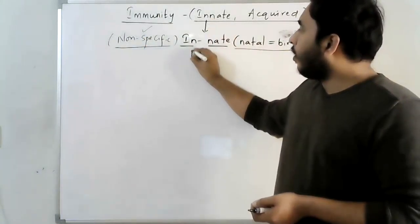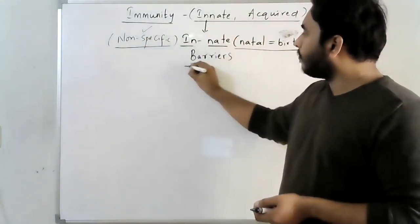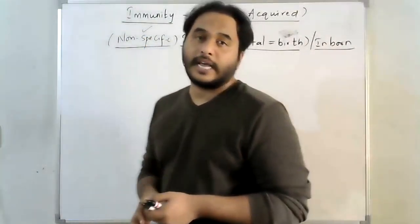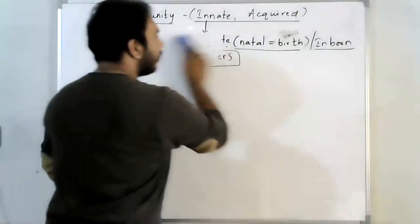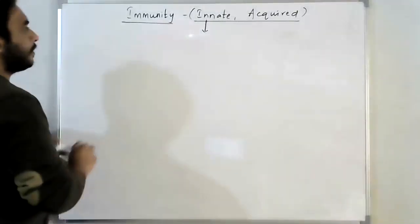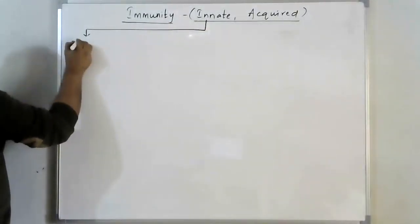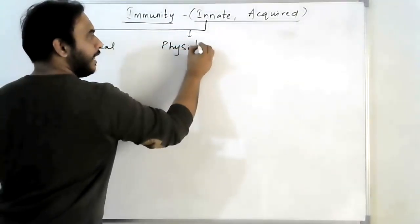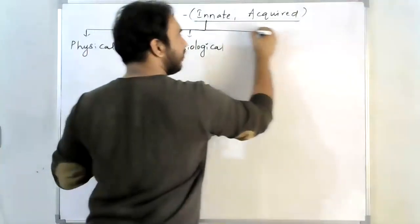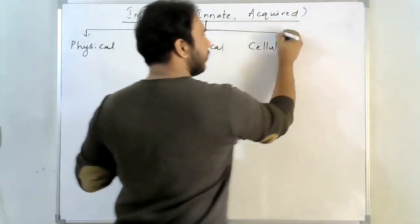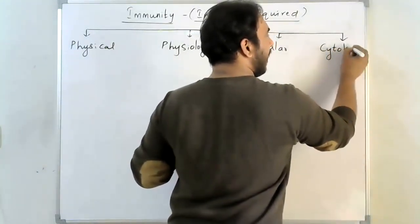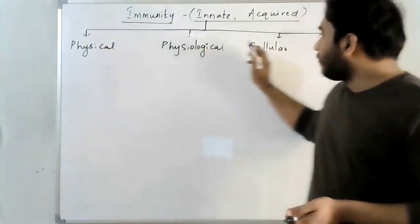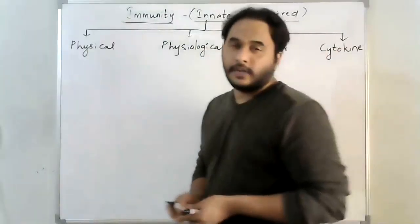This innate immunity we also call barriers. These barriers are classified into four types: number one, physical barriers; number two, physiological barriers; number three, cellular barriers; and number four, cytokine barriers — totally four types.